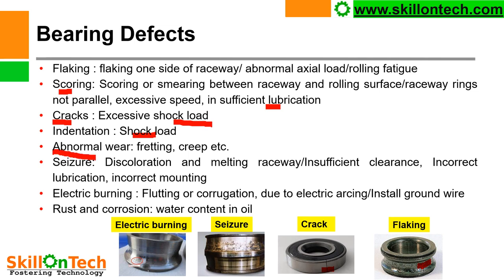Abnormal wear — fretting, creep, etc. Seizure — you can see jamming of the bearing. Discoloration, insufficient clearance, incorrect lubrication, and incorrect mounting are the reasons for seizure of the bearing. You can see a picture here — seizure of the bearing will give you this kind of appearance.